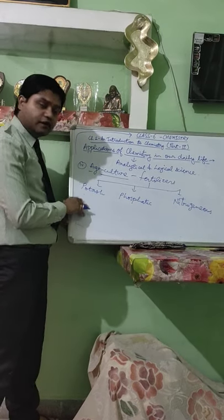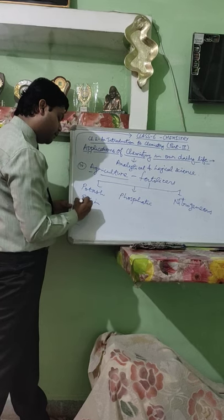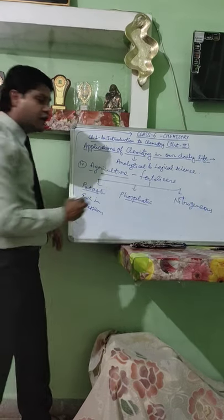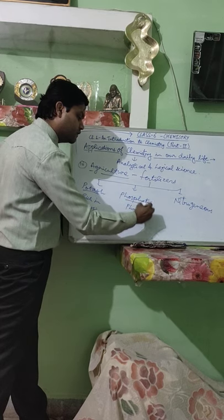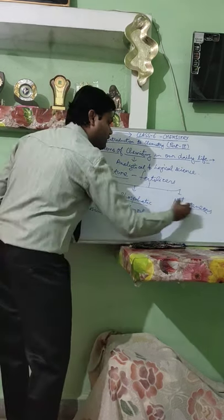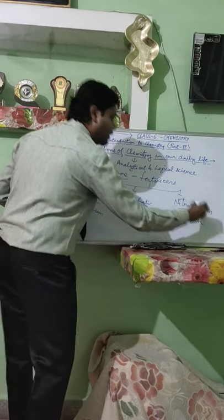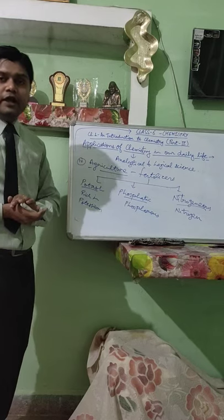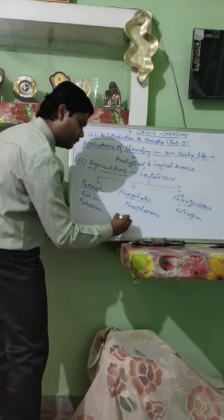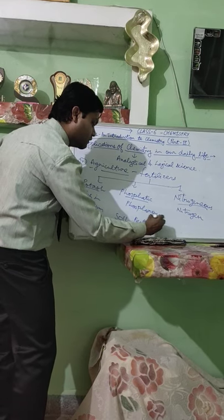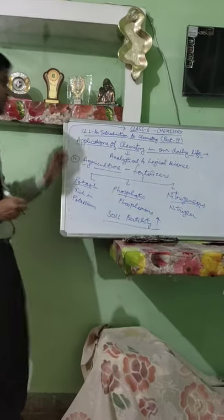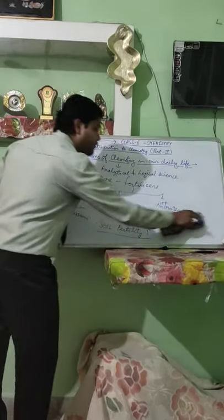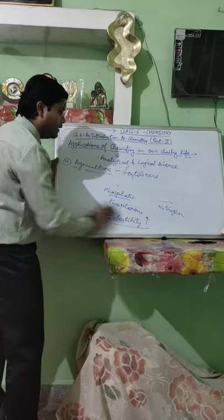Potash fertilizers are rich in potassium. Phosphatic fertilizers are rich in phosphorus. And nitrogenous fertilizers are rich in nitrogen. These all account for the fertility of the soil and make the soil more fertile for agricultural purposes. Soil fertility is increased by the addition of fertilizers.